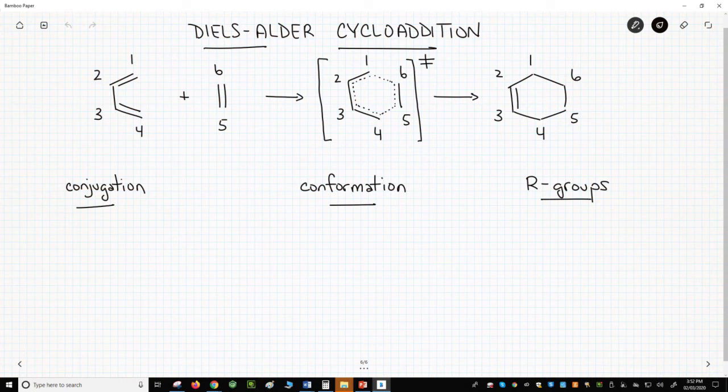The essential details are on the slide. The reaction requires two starting materials. One must be a diene, specifically a conjugated diene. A conjugated diene has two pi bonds separated by a single sigma bond. I've drawn an arrow to that.